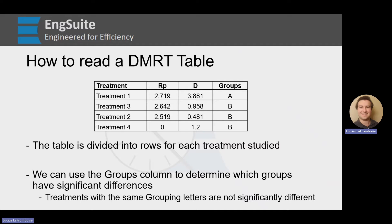So how do we read a DMRT table? This is exactly the table that we are going to get from QE Suite. QE Suite provides this table, and it's what we're going to calculate later in the video. This is using the same exact data that we've already been using. And if you remember from our Tukey pairwise, A, B, B, B for treatments 1, 3, 2, 4 — those are the exact groups we got last time. So we're looking good already.